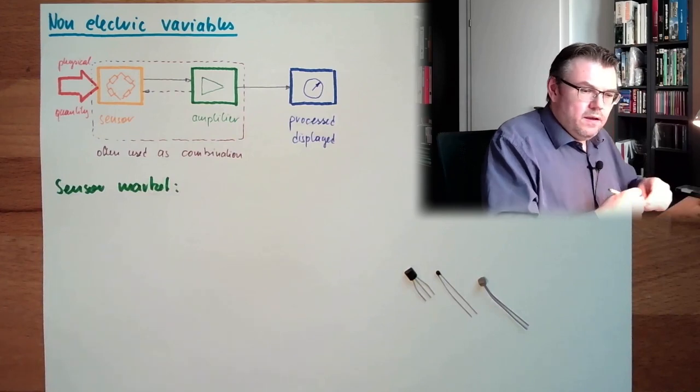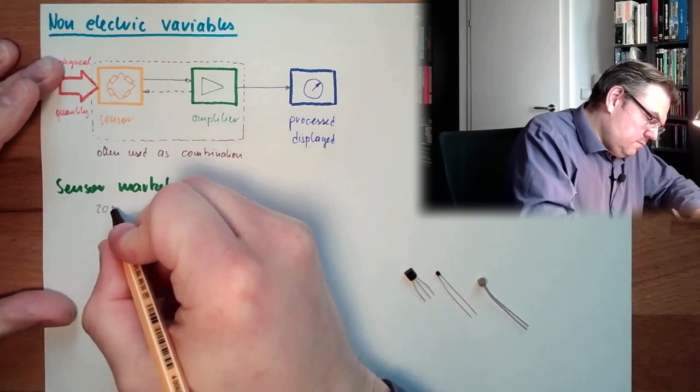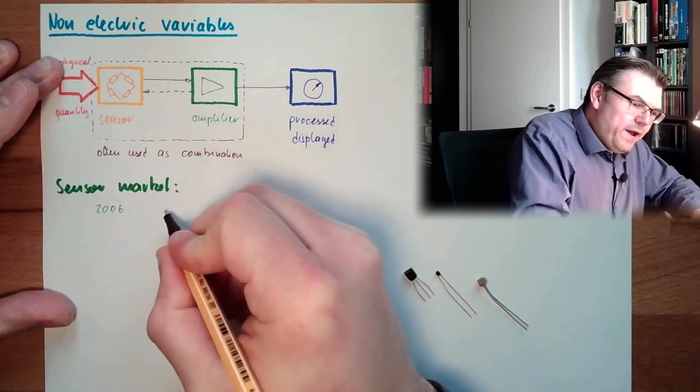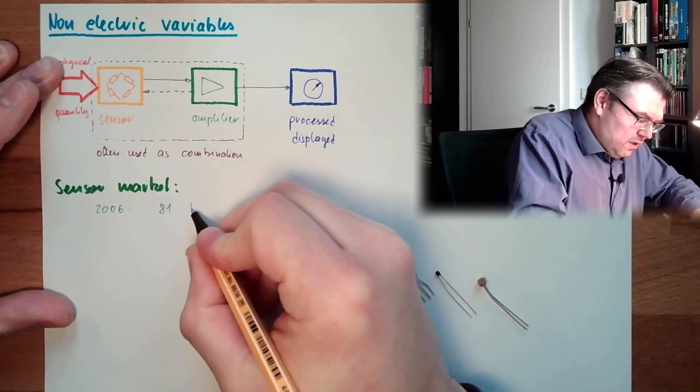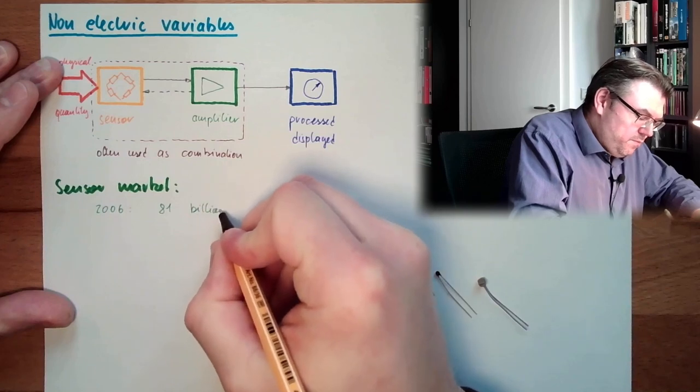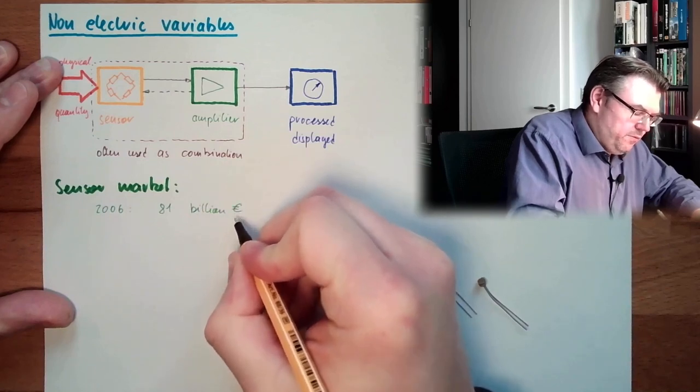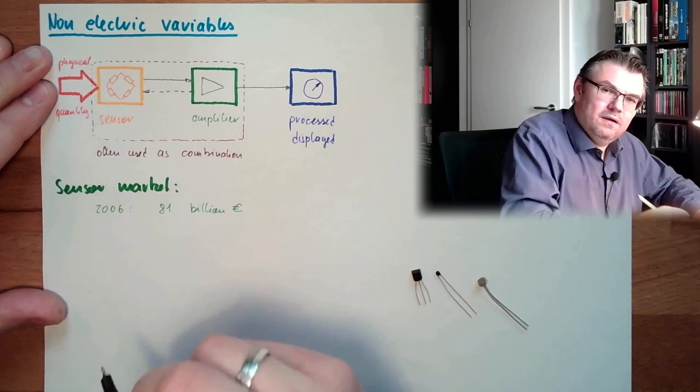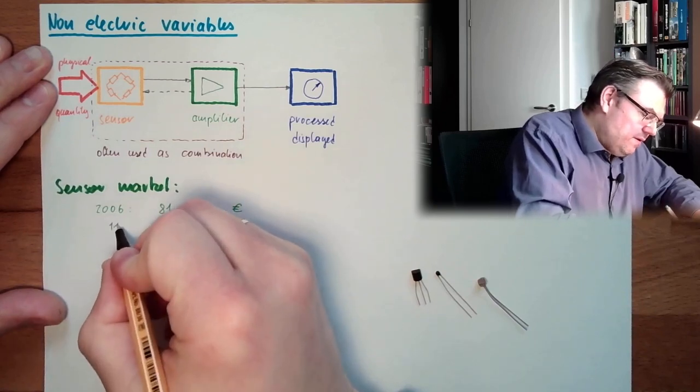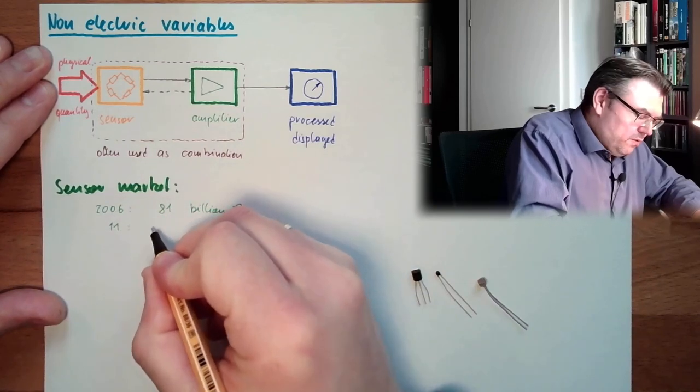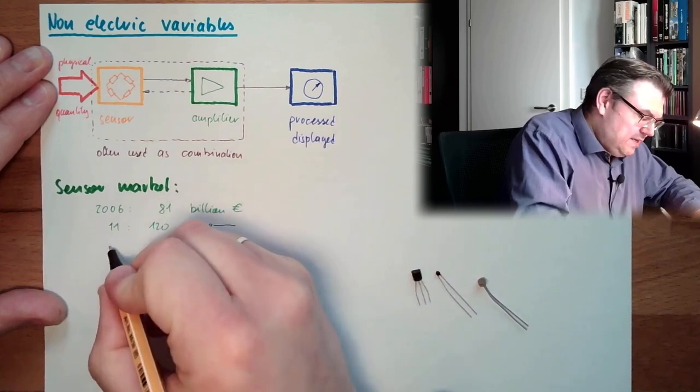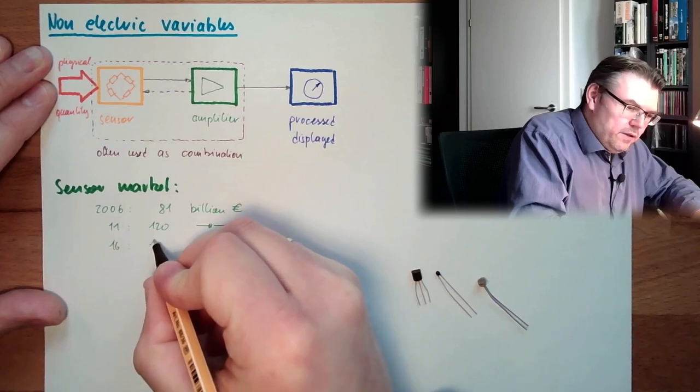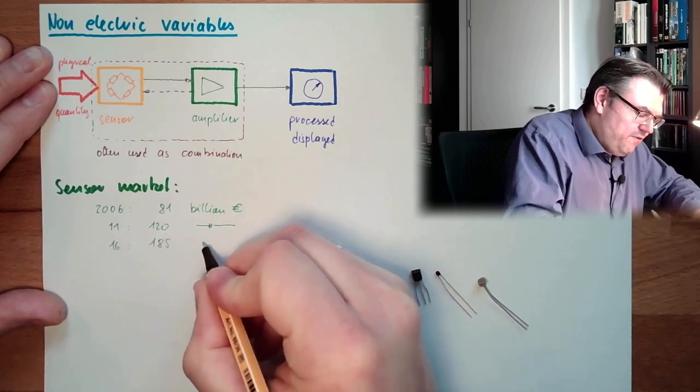In 2006, we had around 81 billion dollars. I'll write euro because we're in Europe. In 2011, we had around 120 billion. In 2016, we had already 185 billion.